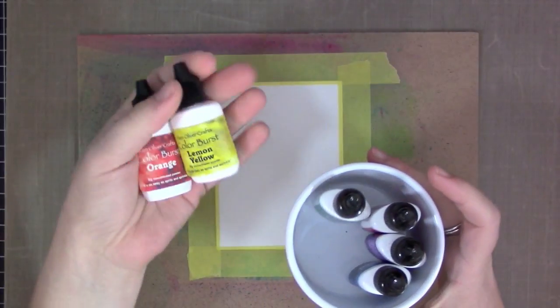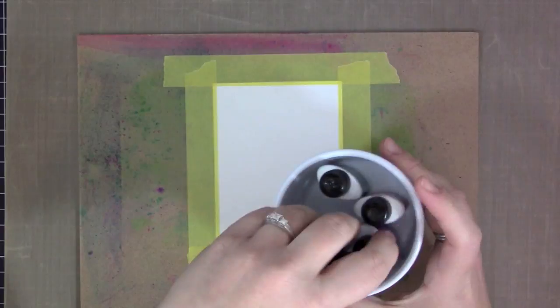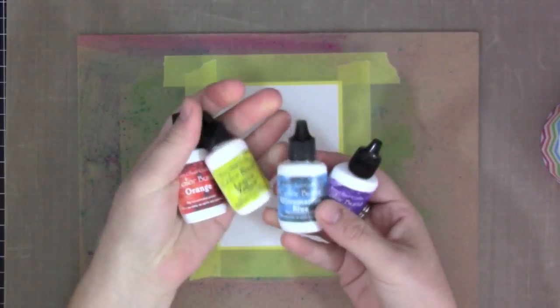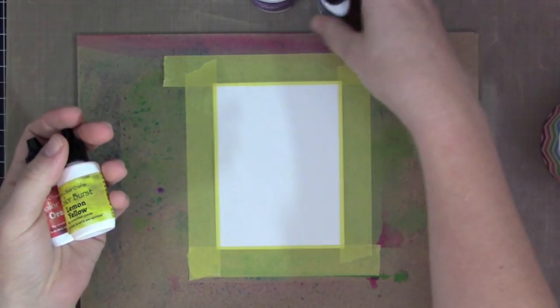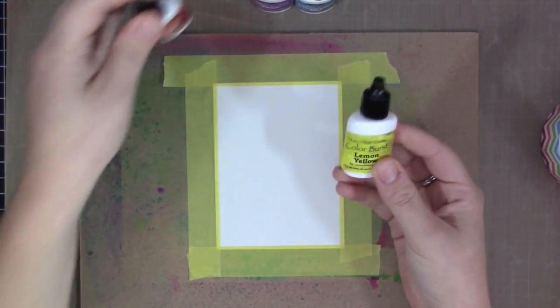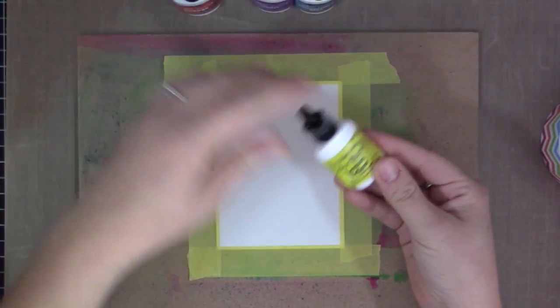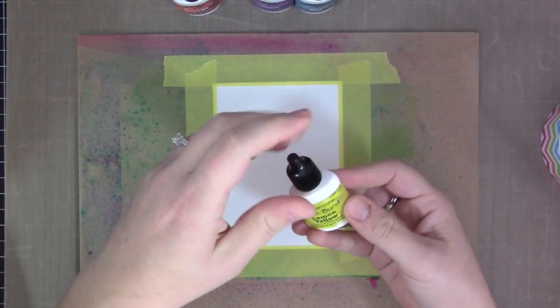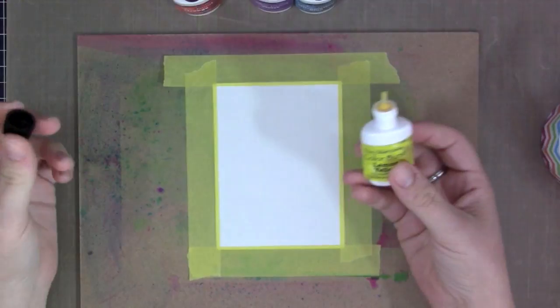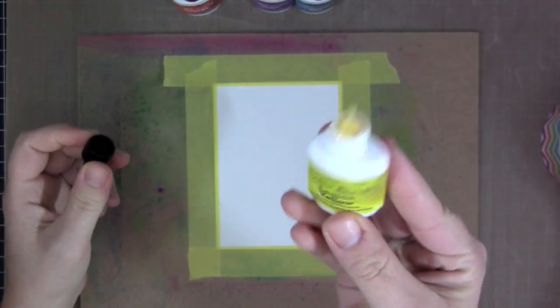To start off, I just adhered a watercolor panel to a piece of board there, and I used painter's tape to hold this down. I went ahead and picked out the colors I'm going to be using for my background here. I'm going to be using lemon yellow and orange first, and that's going to create the glow that's going to go behind the fire that's eventually going to be on the card design.